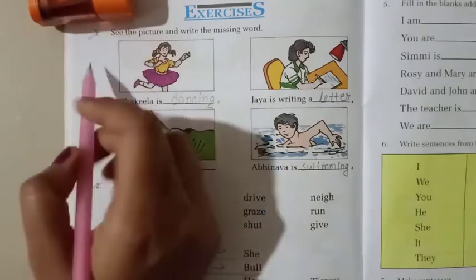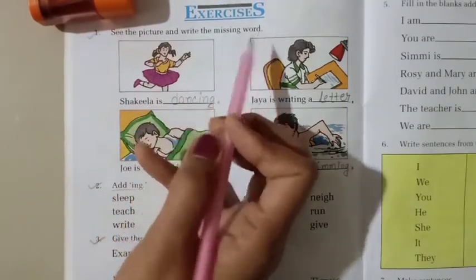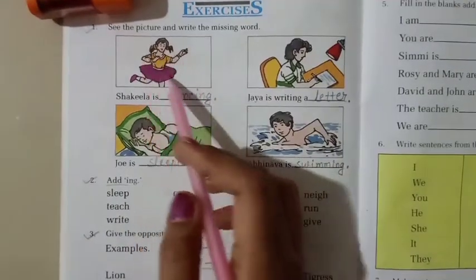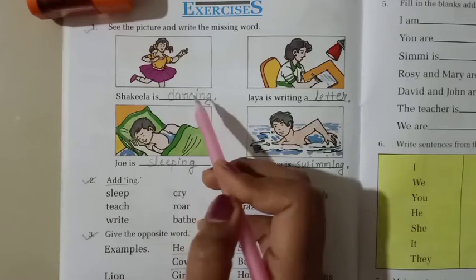Question number 1. See the picture and write the missing word. You have to see the picture and write the missing words of these sentences.